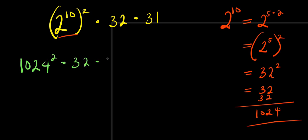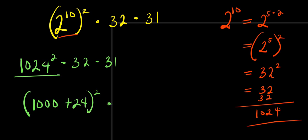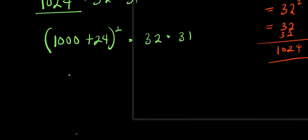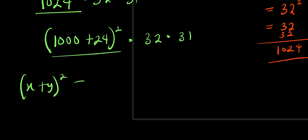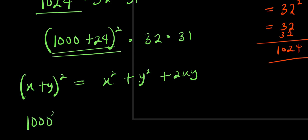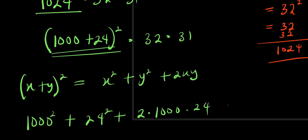So we now have 1024 squared times 32 times 31. What is 1024 squared? I can express 1024 as 1000 plus 24, raised to the power of 2, times 32 times 31. To expand this, I use the identity: (x+y)^2 equals x squared plus y squared plus 2xy.